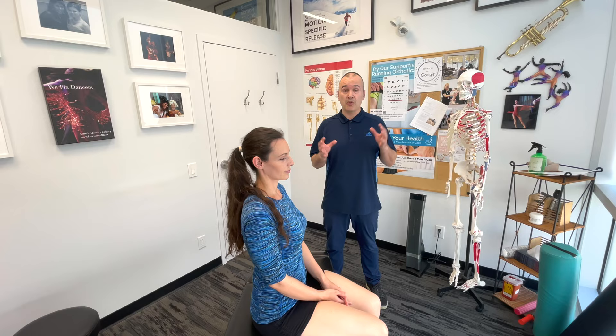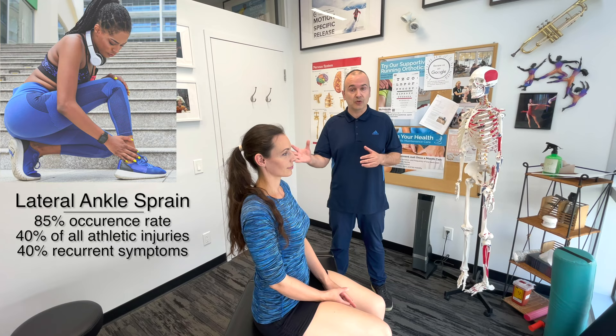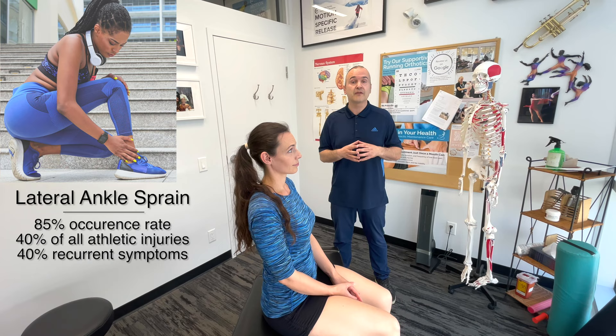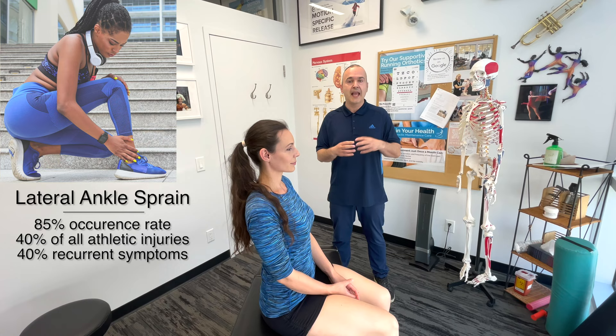Today we'll be demonstrating an ankle and foot examination, starting with lateral ankle sprains. In all athletic injuries, ankle sprains make up about 40%, and of that 40%, 85% tend to be lateral ankle sprains or inversion sprains. Many people suffer recurrent lateral ankle sprains — as high as 40% of those who've had one — and they're found to recruit muscles differently, having difficulty activating muscles in their ankles, knees, and hips during activity. So quite a significant injury.